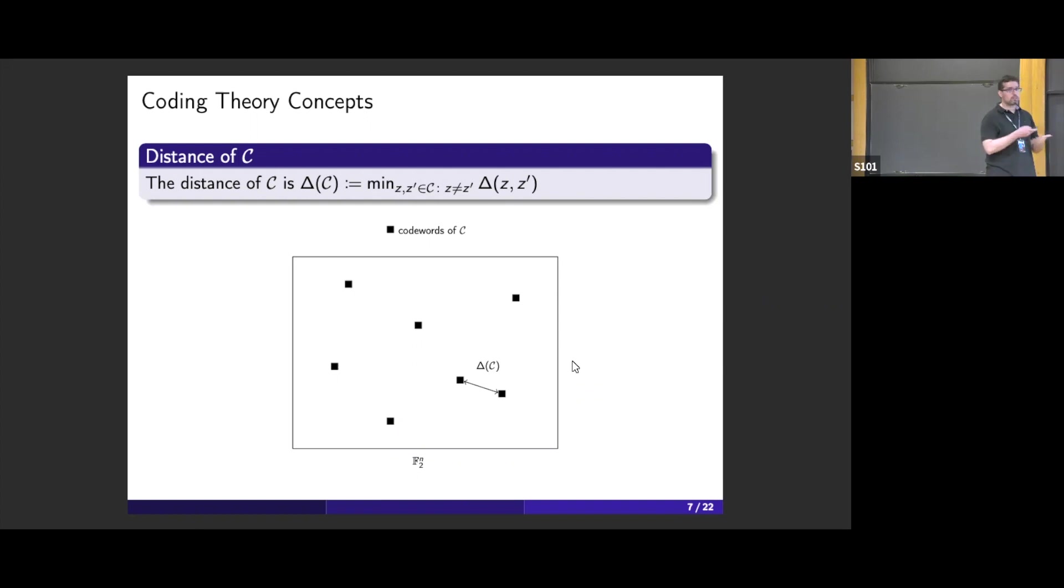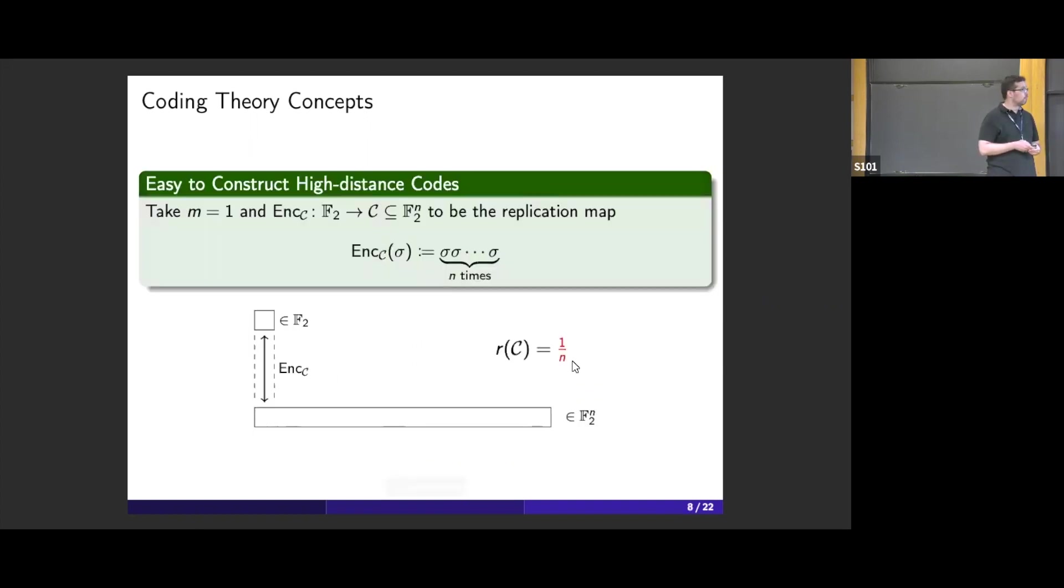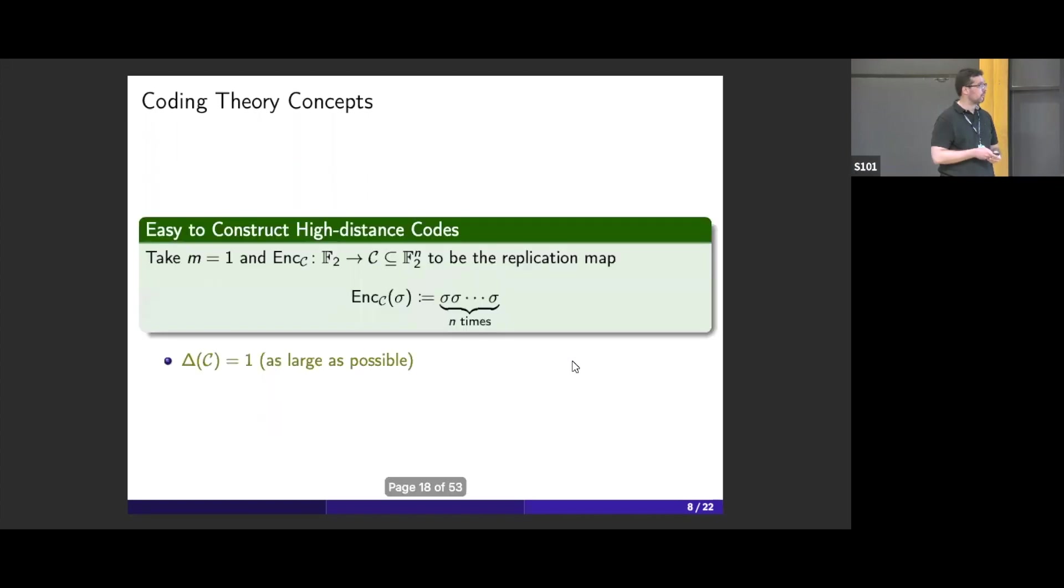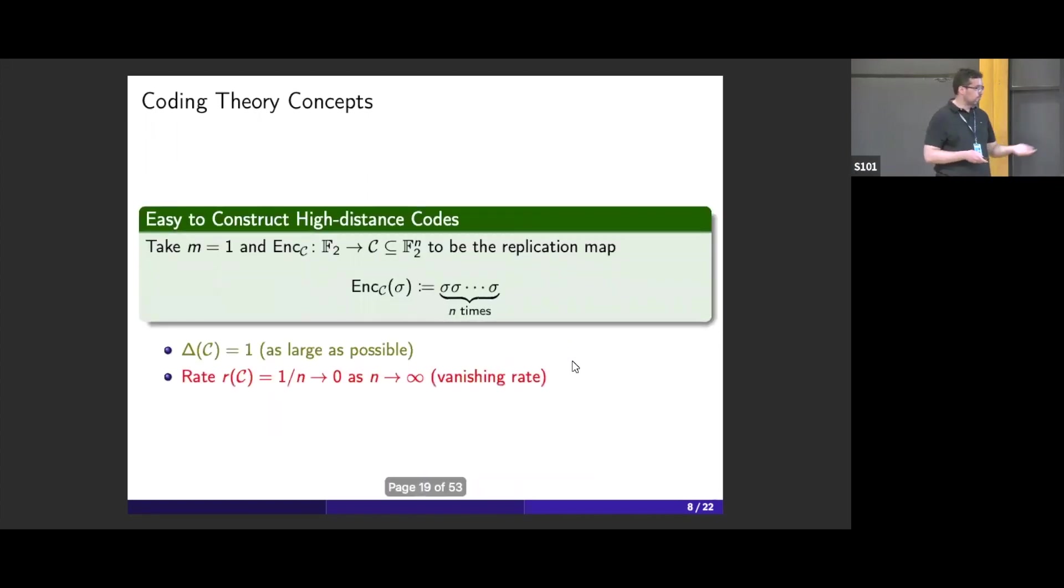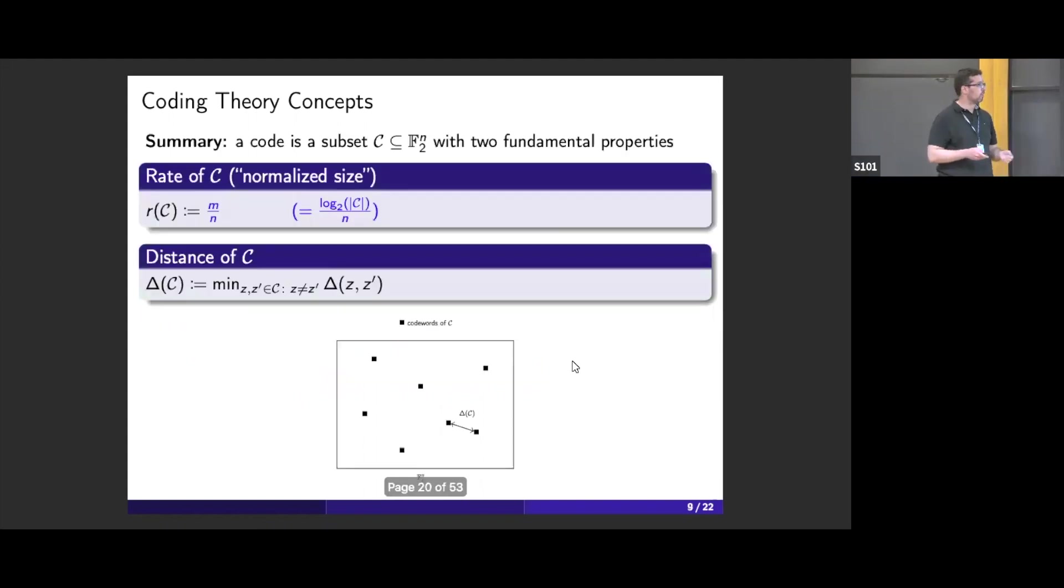We would like to make this distance as large as possible. If you're only trying to achieve large distance in isolation, that's very easy. You can start with one bit and stretch it, copy this bit any time using this replication map. But as you would expect, rate suffers. Out of the N bits that you are using, only one is a true information symbol. So that's pretty bad, but it's easy to have families of codes of large distance. The distance is as large as possible, but the rate is vanishing as N goes to infinity.